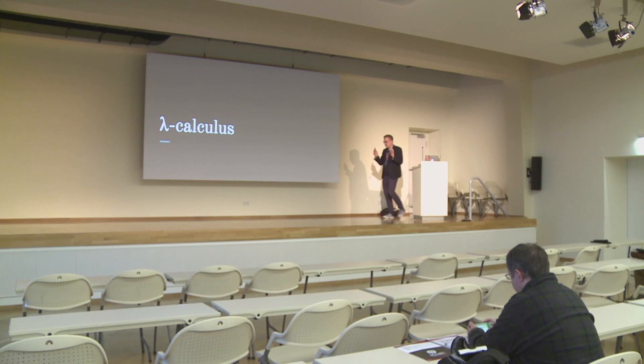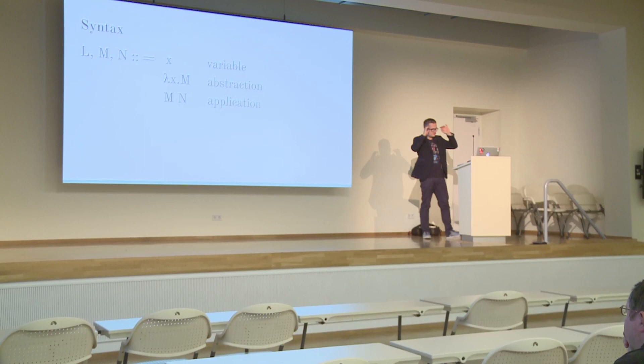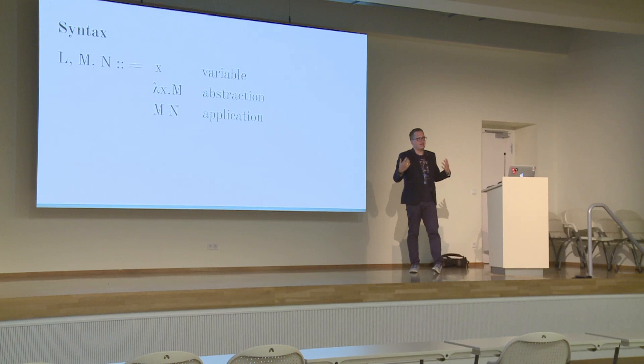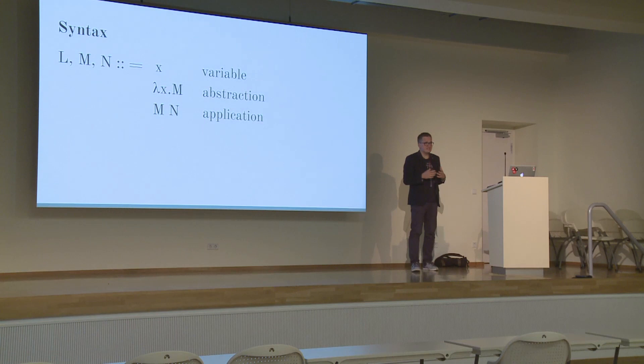Lambda calculus. Lambda calculus, as I said, is a formalism — a model of computation which is compliant with Turing machines and allows us to describe any computation that we would be able to describe on a Turing machine. It's a syntax and it's pretty much simple. Any term in the syntax is either a variable — some name — or an abstraction: a lambda sign, an x, some name, and a continuation where m will be another term in the lambda calculus. And lastly, there's an application — think of it as applying an argument to a function.